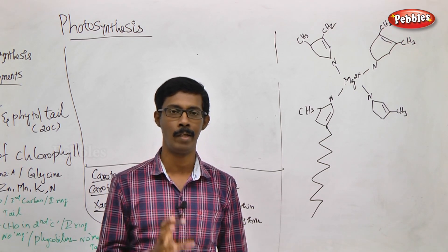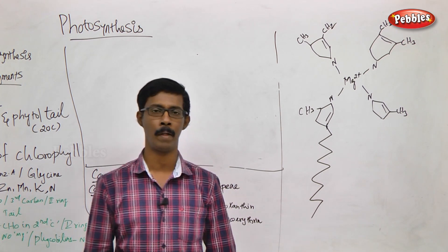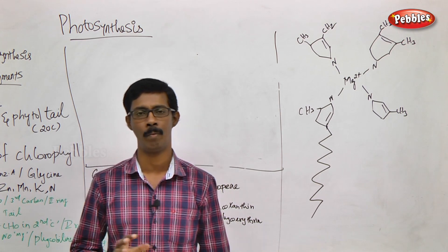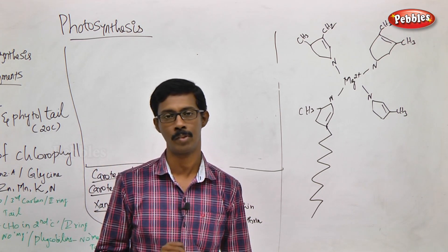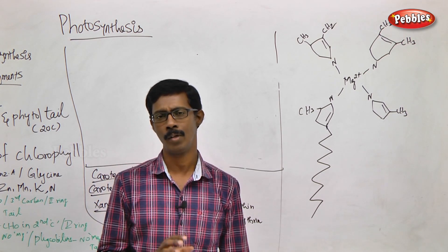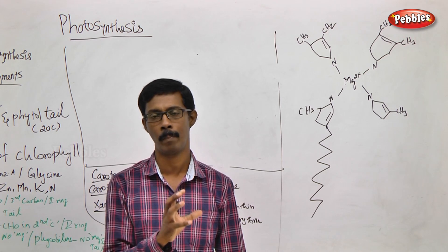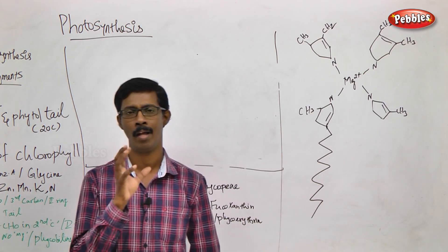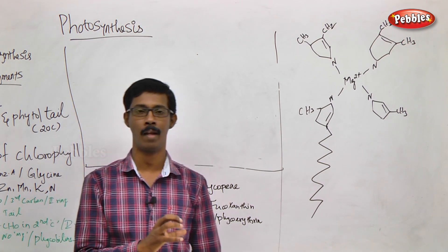In photosynthesis, what is the major pigment? The major pigment is chlorophyll. Apart from chlorophyll, there are two other types of pigments: carotenoids and phycobilins. These sets of pigments together make up a pigment system.